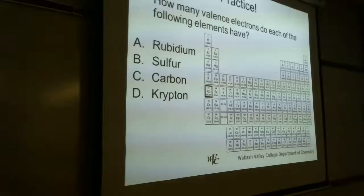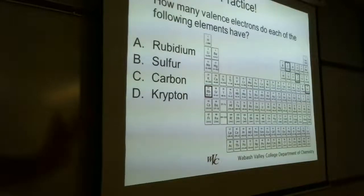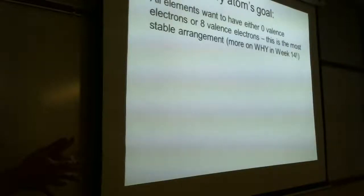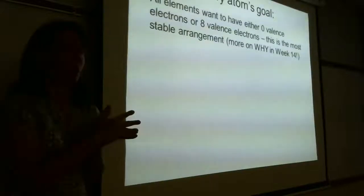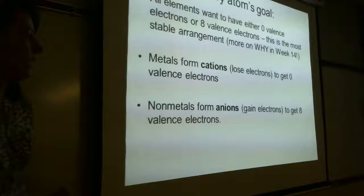Just number your periodic table: one, two, three, four, five, six, seven, eight — straight from the periodic table. Use your periodic table to figure out how many valence electrons each element has: rubidium has one, sulfur has six, carbon has four, and krypton has eight. Transition metals do their own thing, so we're not going to worry about them right now.